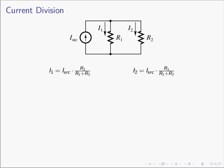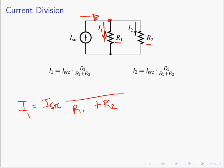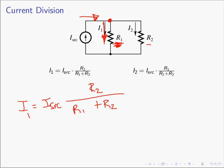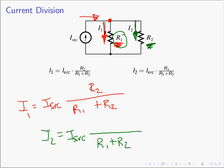So for current division in terms of resistors: if a current I source is divided between R1 and R2, then I1 equals I source times R2 over (R1 plus R2) — the other resistor goes in the numerator. Likewise, I2 equals I source times R1 over (R1 plus R2). The mnemonic: when looking for the current through one resistor, put the other resistor in the numerator.